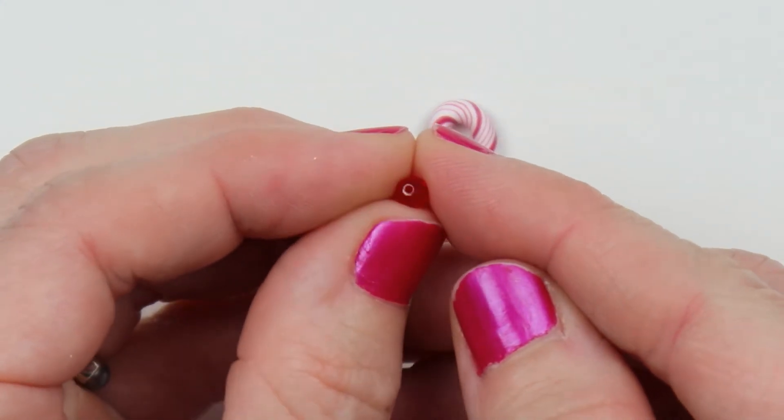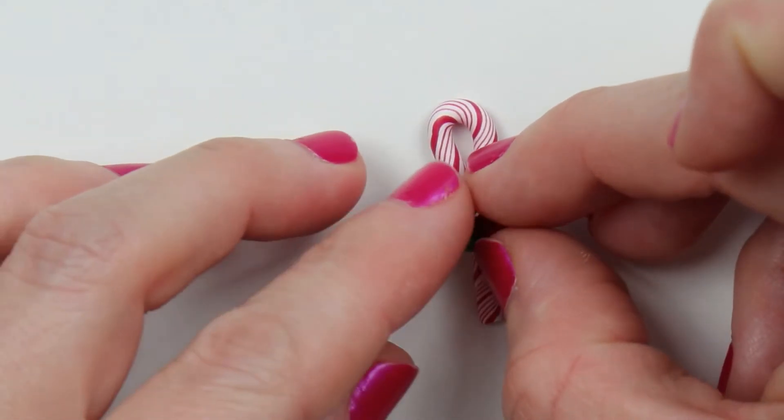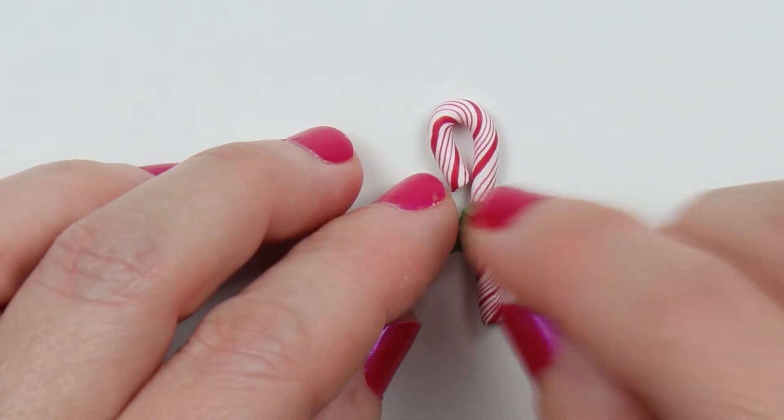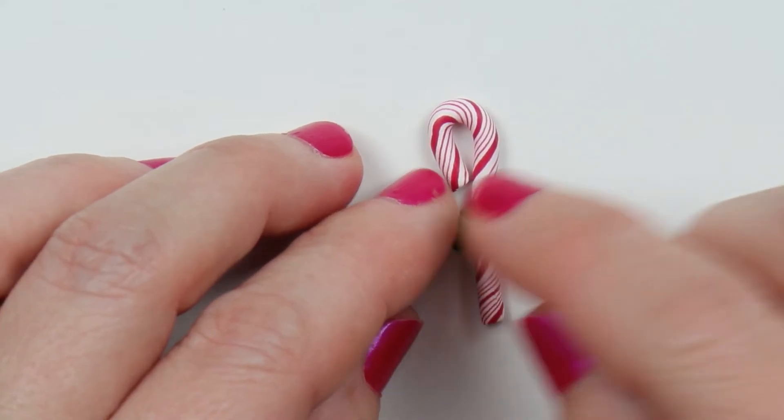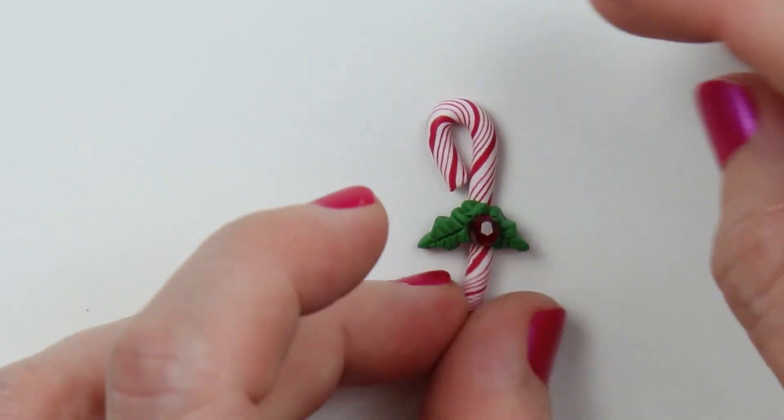And then I'm using this little Swarovski crystal. It's nice and shiny and sparkly. I'll just put that right there in the middle, and then give it a nice press into place, very gently. You don't want to dent the candy cane.